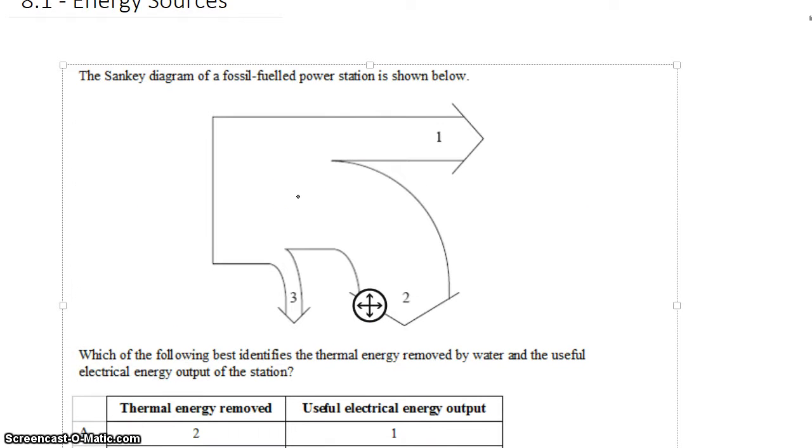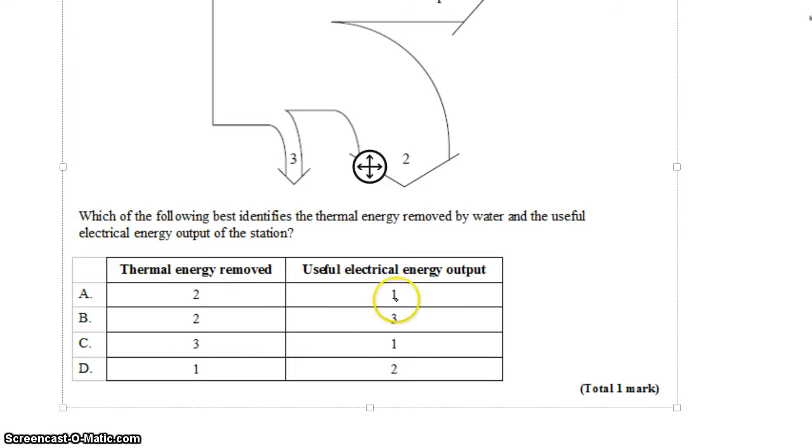So in Sankey diagrams, we can expect that the line going straight through represents the energy that we want to get out. So this is going to be our useful energy. That means our answers are going to be either A or C, not B or D.